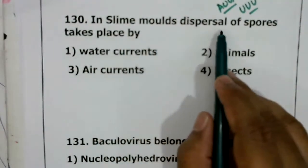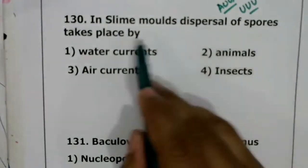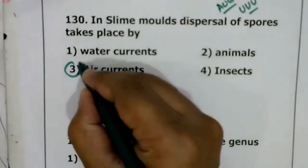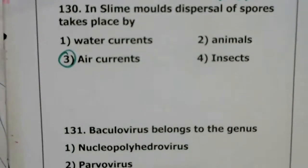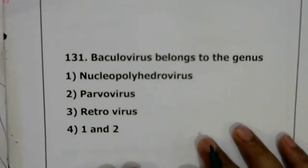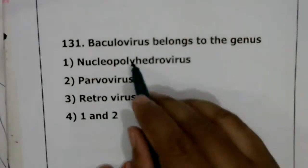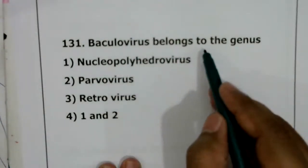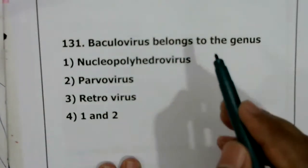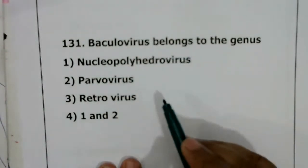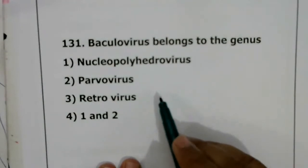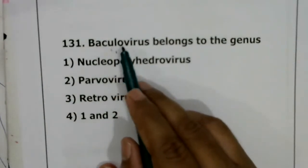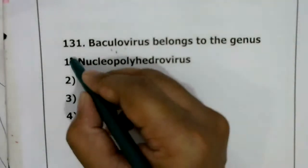Question 130: in slime mould, dispersal of spores takes place by air currents. Baculovirus belongs to the genus and they are very effective biocontrol agents with a narrow spectrum range, belonging to nucleopolyhedrovirus.